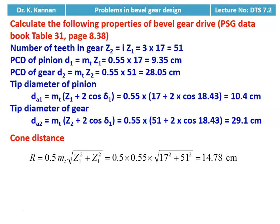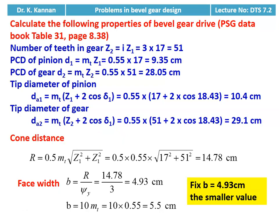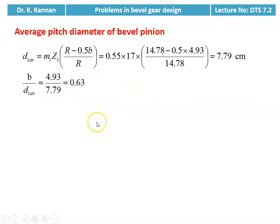The actual cone distance 14.78 centimeter is higher than the earlier calculated minimum of 8.54 centimeter. For face width, using two equations: b = R / ψY = 14.78 / 3 = 4.93 centimeter, and b = 10 × mt = 10 × 0.55 = 5.5 centimeter. We fix the smaller value: face width b = 4.93 centimeter. Average pitch diameter of the bevel pinion: d1_avg = mt × Z1 × (R − 0.5b) / R = 0.55 × 17 × (14.78 − 0.5 × 4.93) / 14.78 = 7.79 centimeter. b / d1_avg = 4.93 / 7.79 = 0.63.